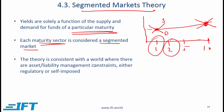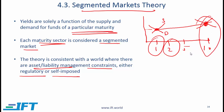This theory is consistent with a world where there are asset-liability management constraints, either regulatory or self-imposed. For example, in a given economy the demand for 10-year instruments may be dominated by pension funds that have liabilities with a duration of roughly 10 years. Given that high demand, we will possibly have higher rates, because higher demand will imply higher rates. There is a certain supply and demand coming from the various pension funds that will drive the interest rates associated with 10-year instruments.